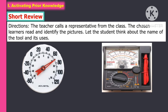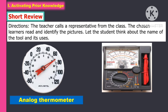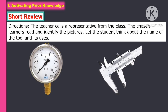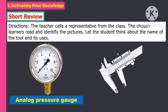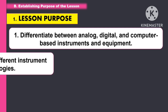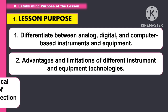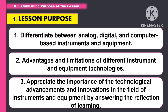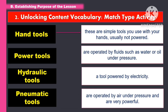In activating prior knowledge for the short review, the teacher calls a representative from the class, and then the chosen learners read and identify the pictures and let the student think about the name of the tools and its uses.